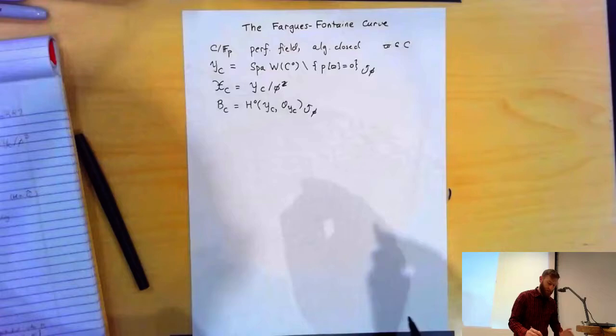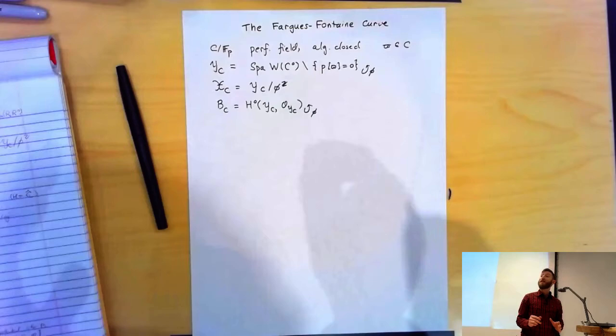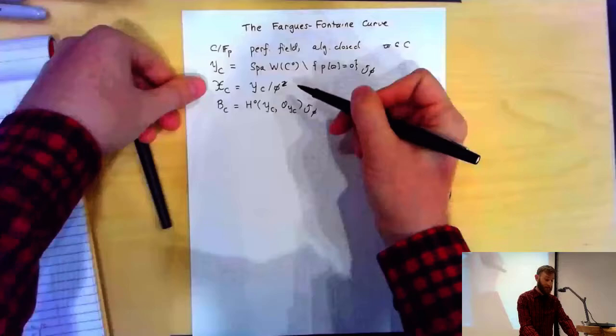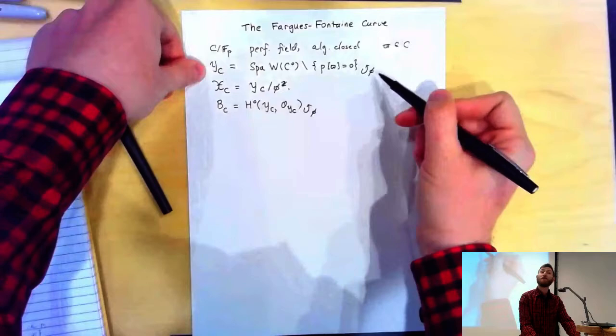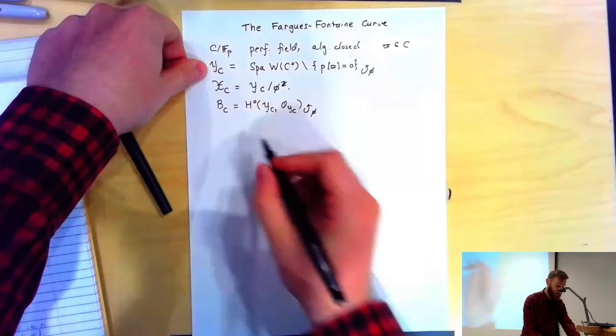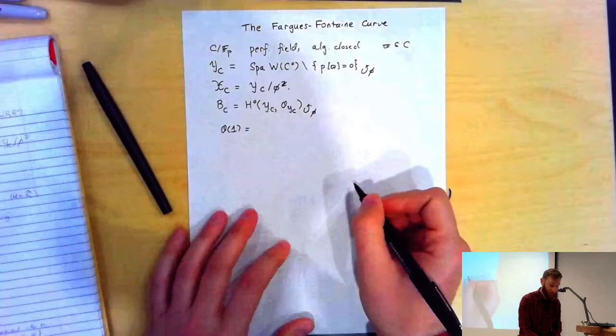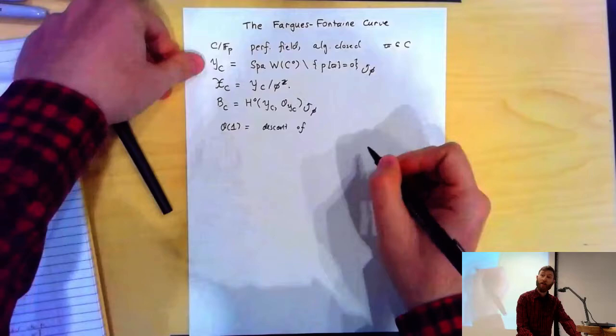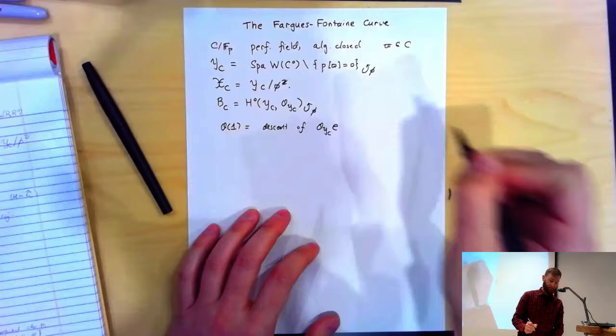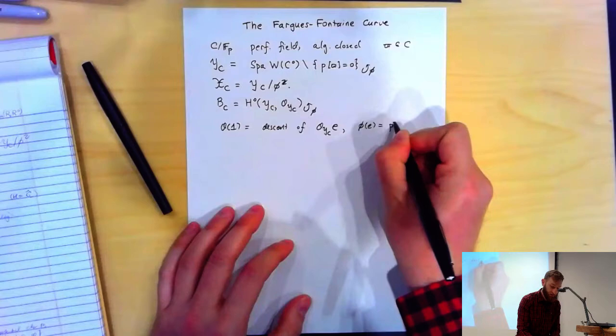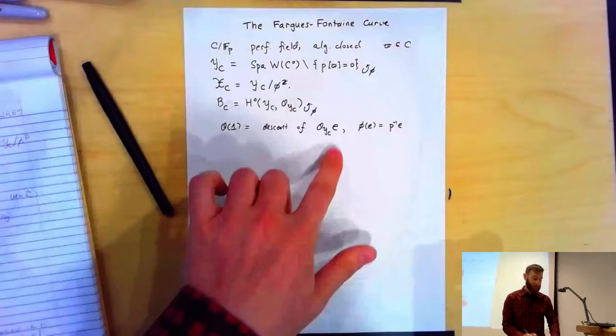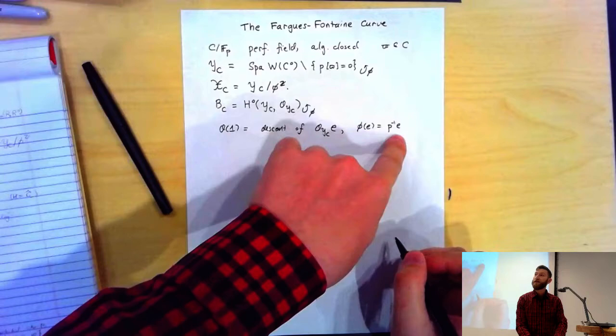I want to repeat one of the constructions Karan talked about last time, which had to do with a vector bundle. How would you construct a vector bundle on the curve X_C? You would construct a vector bundle on Y_C with φ-equivariance so that it might descend. The bundle is called O(1) — a descent of a trivial bundle on Y_C, which I'll call O_{Y_C} with a basis vector e. φ divides e by P, giving a free O_{Y_C}-module of rank 1 with φ-equivariance that descends to a vector bundle on the curve X_C.